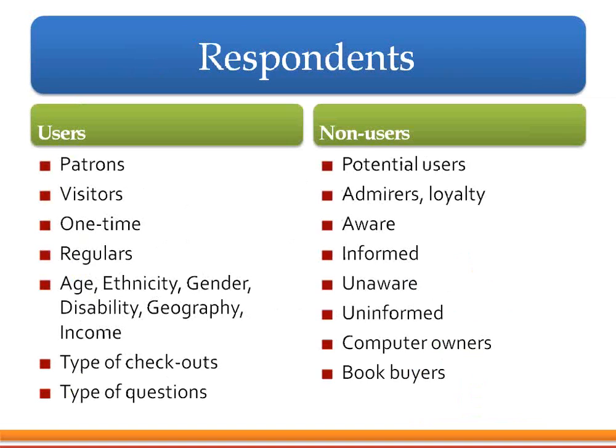Who are some of the respondents you're going to target? You might be surveying patrons, visitors, people who come just one time, or your regulars. You might be looking at certain ages, ethnicities, gender, disability, geography, or types of income. You might also be trying to catch people by types of checkouts or questions. Non-users are also a target — potential users, people who hold the library in high esteem, those who are aware of your services, and those who are unaware or uninformed. You might also distinguish computer owners versus those who use your library lab, or book buyers versus those who borrow.